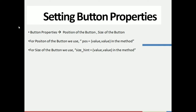The button properties we require are: the position of the button and the size of the button. For position, we use `pos`, which takes x and y axis values defined as `pos = value, value`. For the size of the button, we use `size_hint` followed by two values: `size_hint = value, value`, which we define in the method.